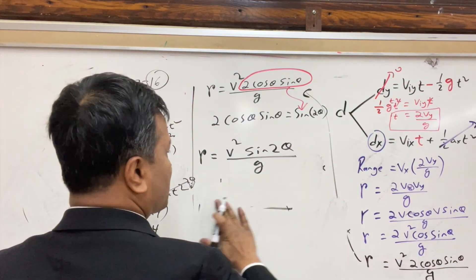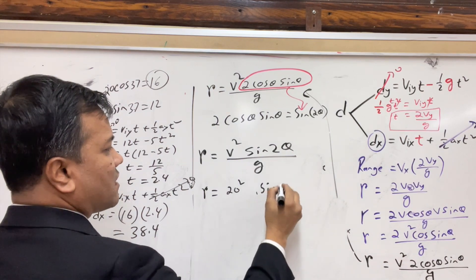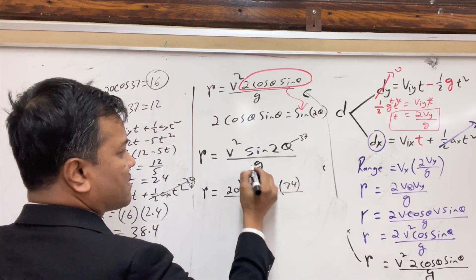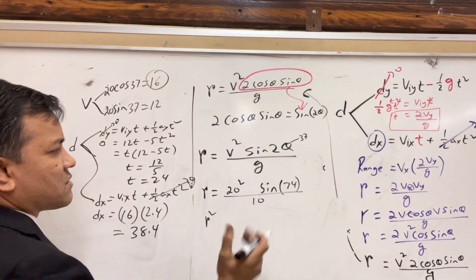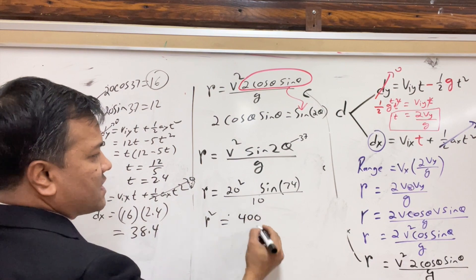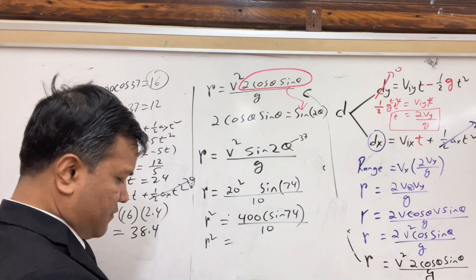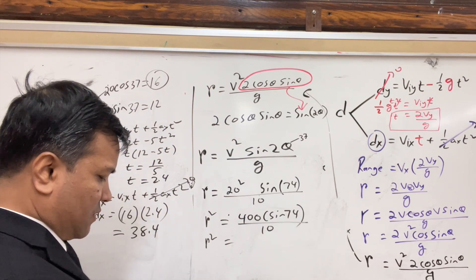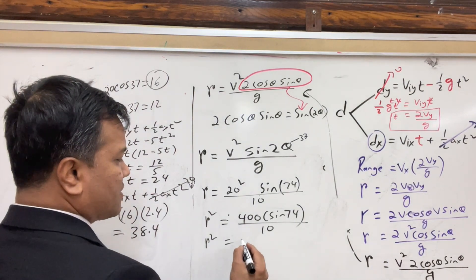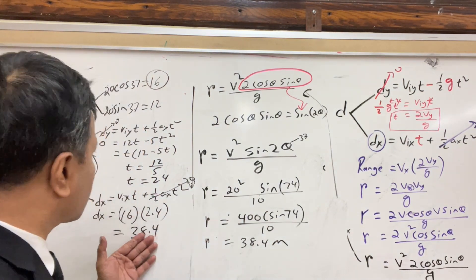Now using the range formula — a fraction of a second. v² = 20² = 400. The angle is 37°, so 2θ = 74°. g = 10 m/s². Range = 400·sin74° / 10. Sin 74° gives 400 × sin74 = 384, divided by 10 equals 38.4 m. Same answer! You see — this takes a fraction of a second, while the traditional method takes much longer.